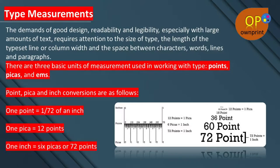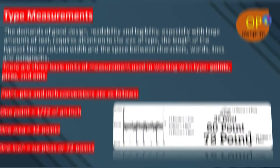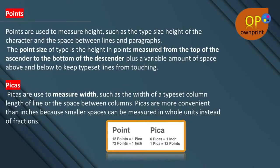Point, pica, and inch conversions are as follows: one point is equal to 1/72 of an inch; one pica is equal to 12 points; one inch is equal to 6 picas, or 72 points. Points are used to measure height, such as the type size, height of the character, and space between lines and paragraphs. The point size of a type is the height in points measured from the top of the ascender to the bottom of the descender, plus a variable amount of space above and below to keep typeset lines from touching.